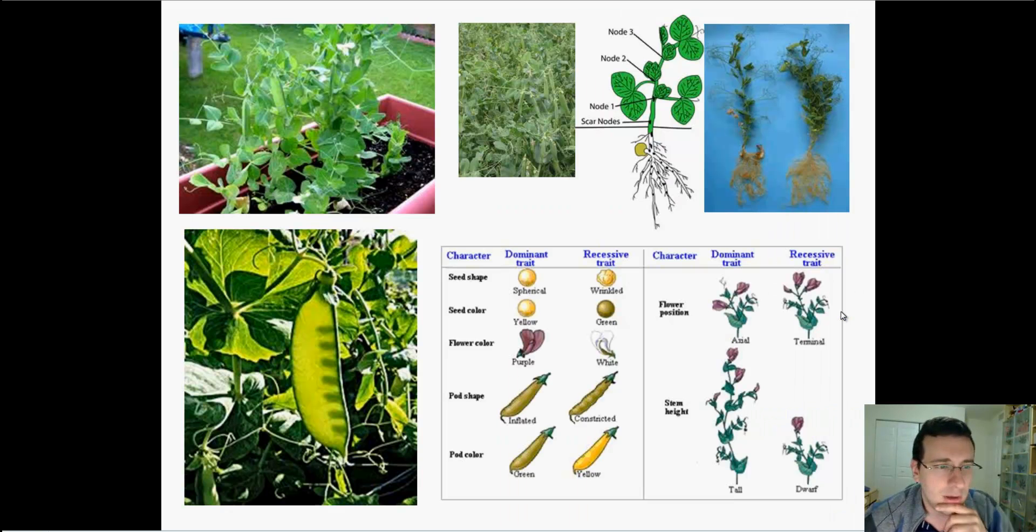Why did he use pea plants? Why did he choose something else to study? There's two reasons. First of all, the pea plants can reproduce very fast because they make a lot of seeds, a lot of pods. They also grow very fast. That means that you don't have to wait many years between generations. If you were doing this with humans, each generation of human is minimal usually about 13 years because you have to hit puberty before you can have a child.